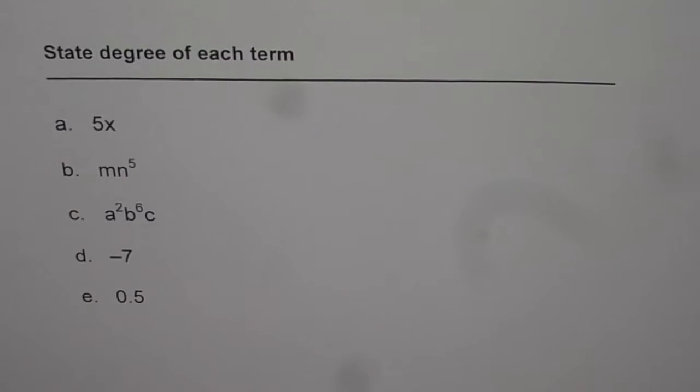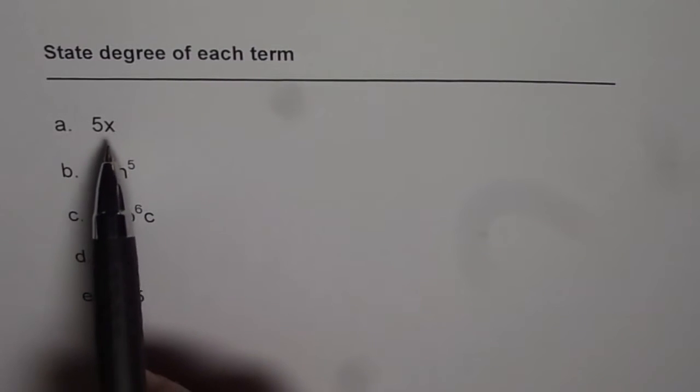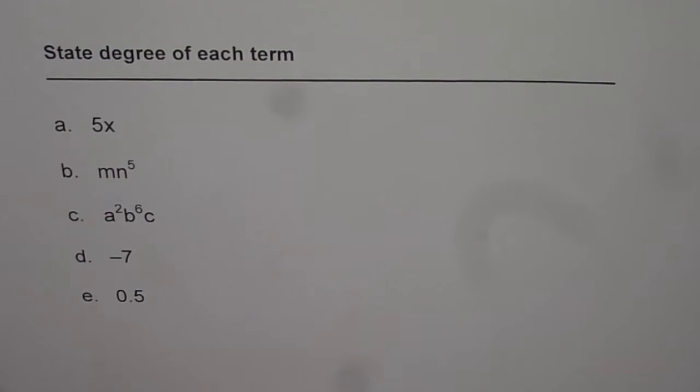Let us now understand how to state degree of the terms. So we have 5 terms here and let us state degree of each term. So degree is the exponent of the variable. Let us remember that.